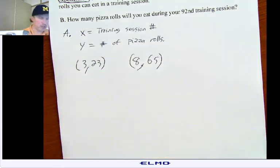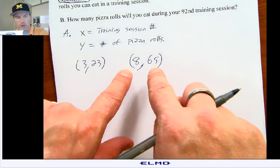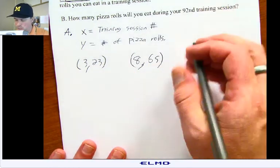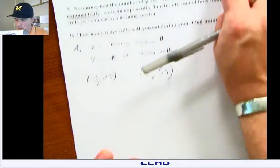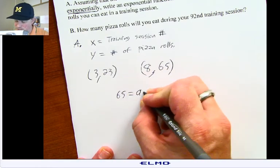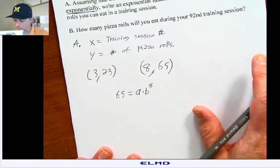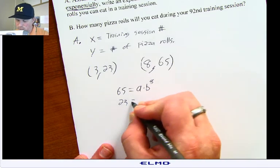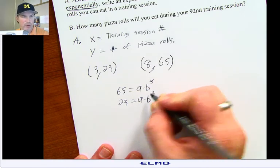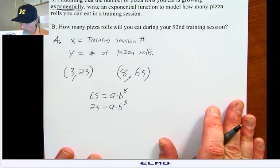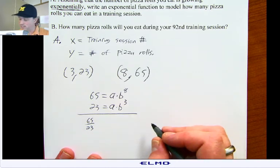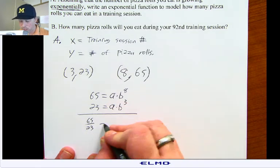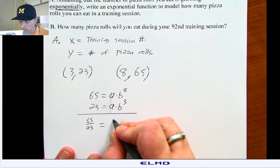I start off, I always like to plug the larger equation in first. So using y equals a times b to the x, I'm going to have 65 equals a times b to the 8 and 23 equals a times b to the 3rd. When you divide the two equations, you get 65 over 23, which does not divide evenly, equals b to the 5th.